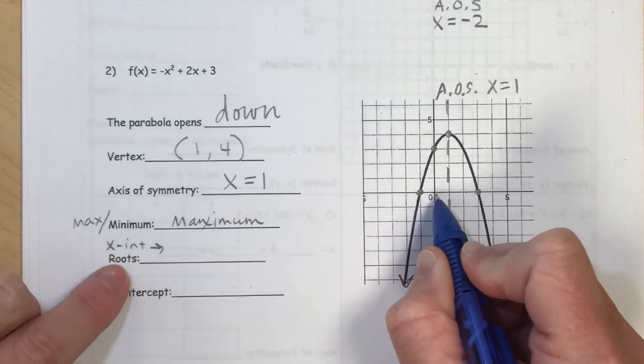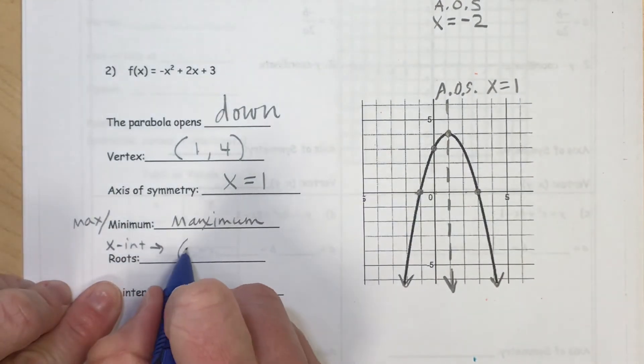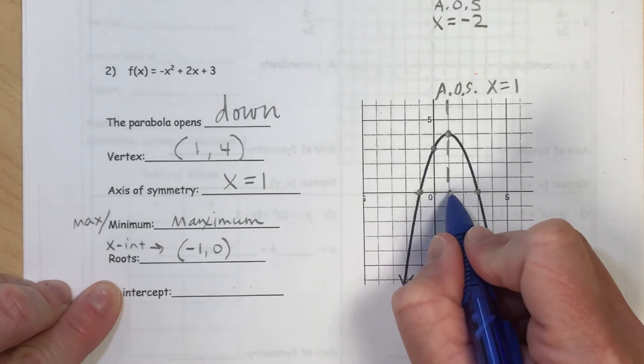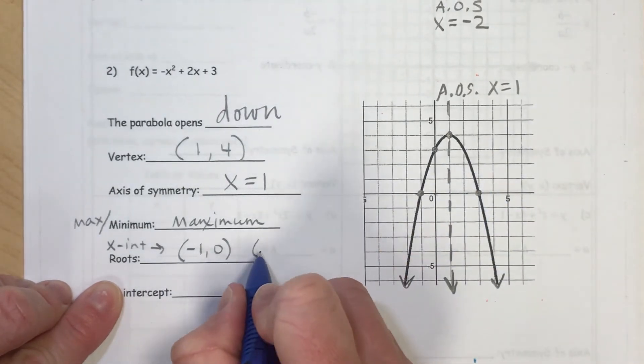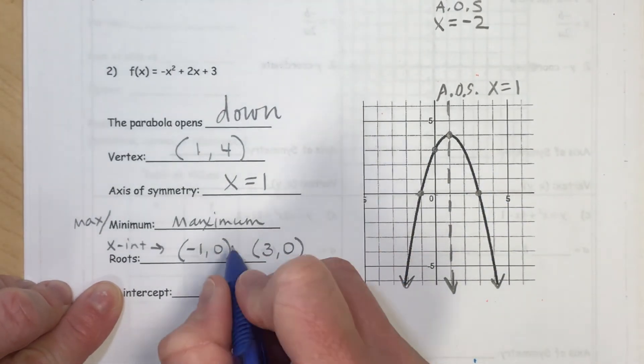Here, this point on the left, we went left 1. So that's going to be negative 1, 0. And from the origin, we went 1, 2, 3 to the right. So that would be 3, 0.